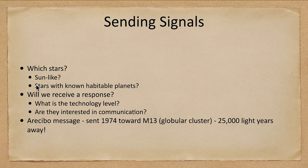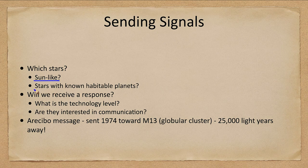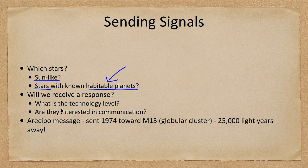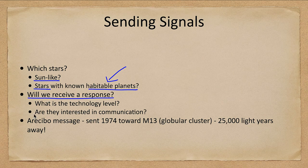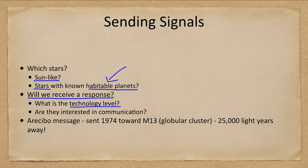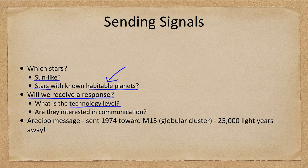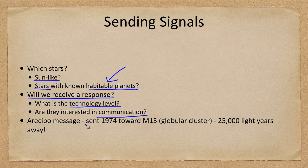So where are we going to send these signals? Well, Sun-like stars. We tend to think that those are the most likely ones to have life like we have on Earth. Stars with known habitable planets. Certainly that's a good starting point, because at least we know there's the possibility of a habitable planet there. And the question again is, will we receive a response? How long will it take? What is the technology level of the civilization? If we had received a signal 200 years ago, it never would have been detected, let alone responded to. So maybe civilizations sent us signals for hundreds of years and gave up on us as no life in this area. Are they interested in communication? Are all civilizations interested in communication and in what else is going on?